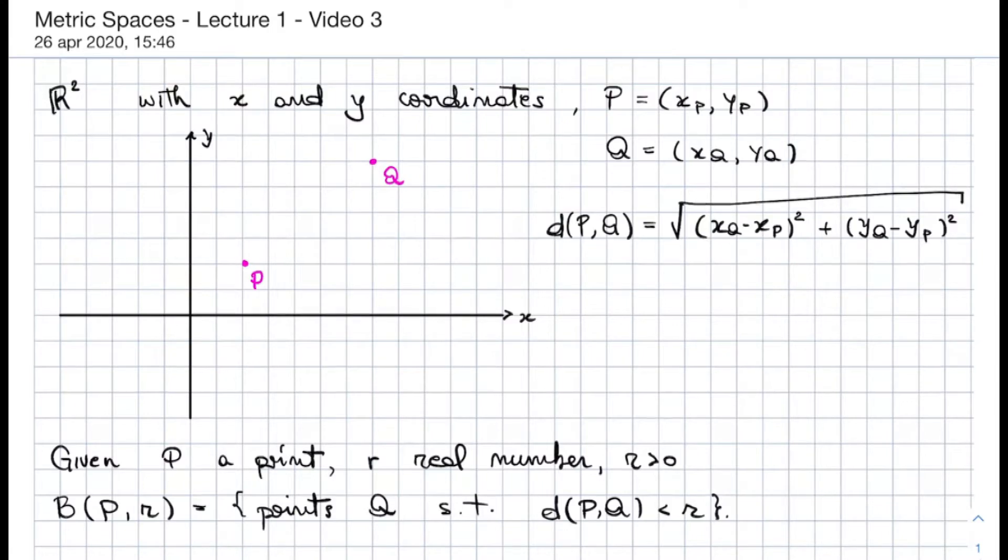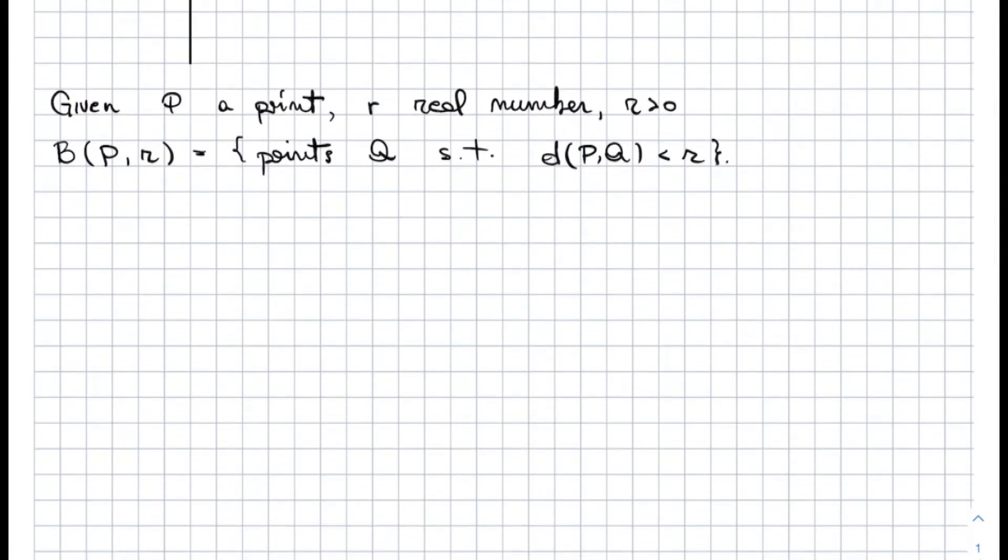The first example we are going to see is the p distance. So we fix p, a number between 1 and infinity, which means that it is just a number that is greater or equal than 1, and it is smaller than infinity. So it is any number bigger or equal than 1. Then we define the distance between p and q, where p and q have coordinates xp, yp, xq, yq, to be equal to the pth root of the absolute value of (xq minus xp) to the p plus (yq minus yp) to the p.